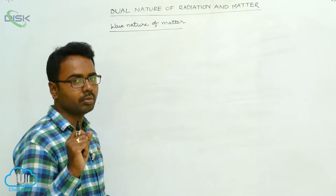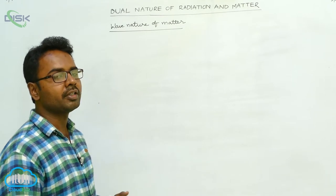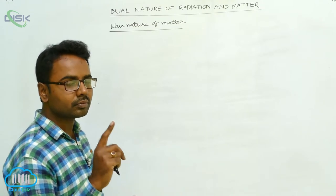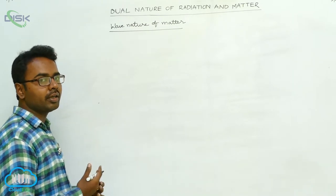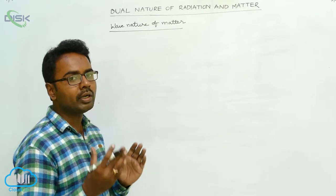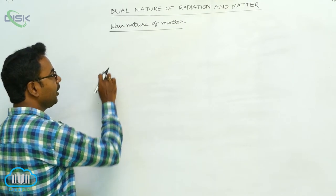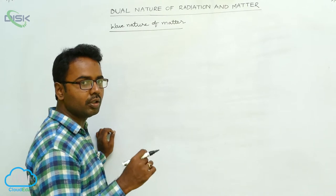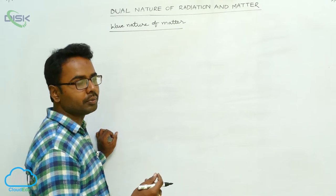Whenever light is observed by the rods and cones on the retina of the eye, light behaves as if it is made up of particles. So light exhibits both wave and particle nature. The scientist de Broglie then asked: if wave and particle nature is possible for radiation, why could it not also be possible for matter? He concluded that particles of matter also have wave nature.